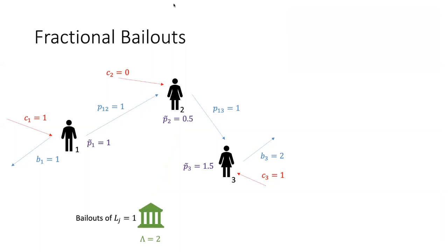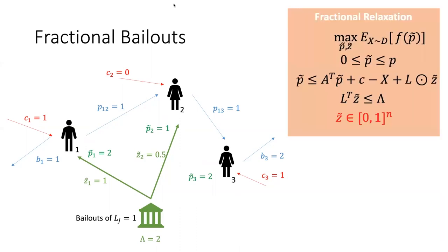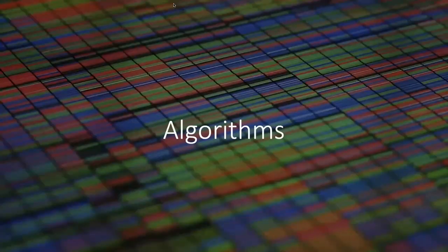Now consider the fractional relaxation of the problem. In this case, we relax the values of the allocations to be fractional. So node one would still get a bailout of one, but node two can get a bailout of 0.5, in which case we can again completely avert the shock. In optimization terms, the only change is that we allow the bailout allocation variables to lie in [0, 1].